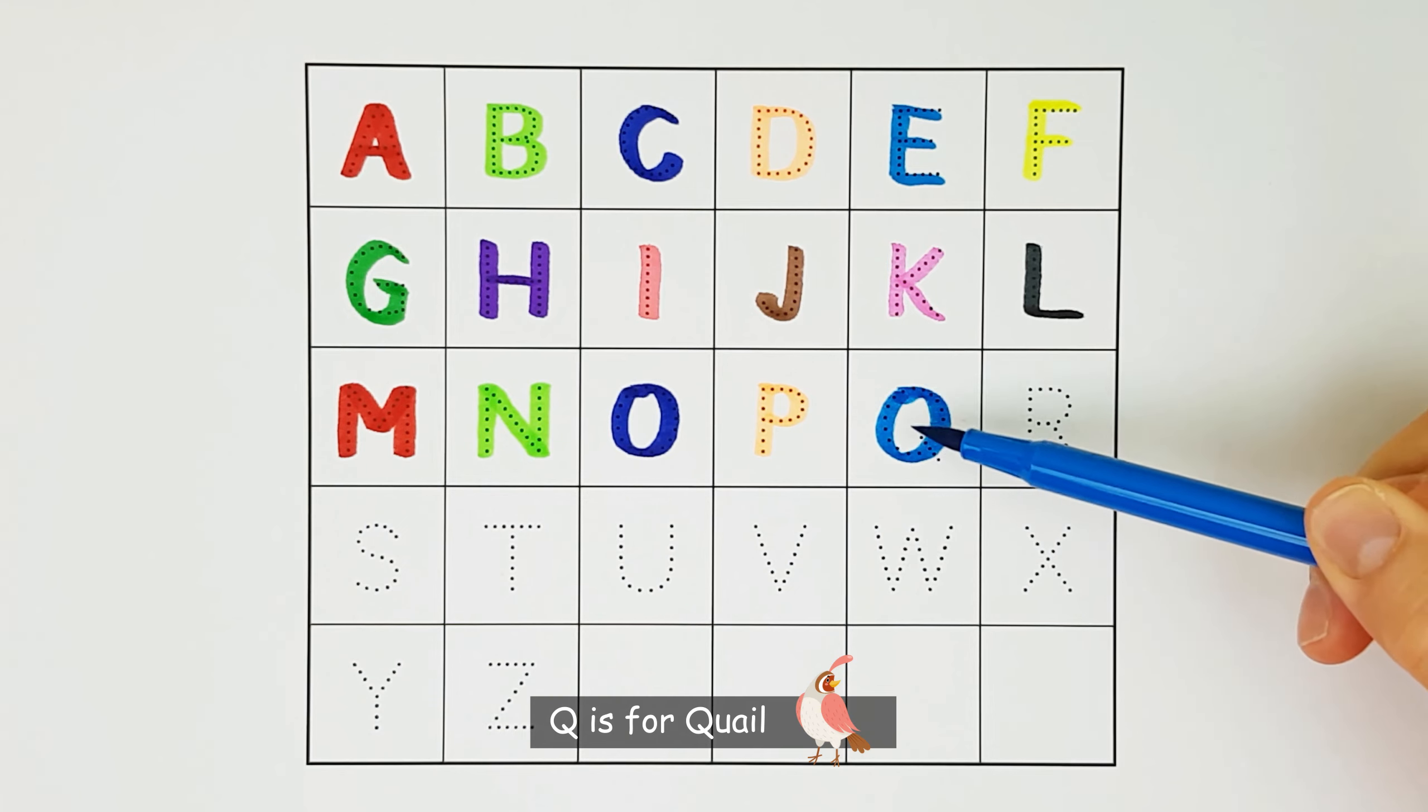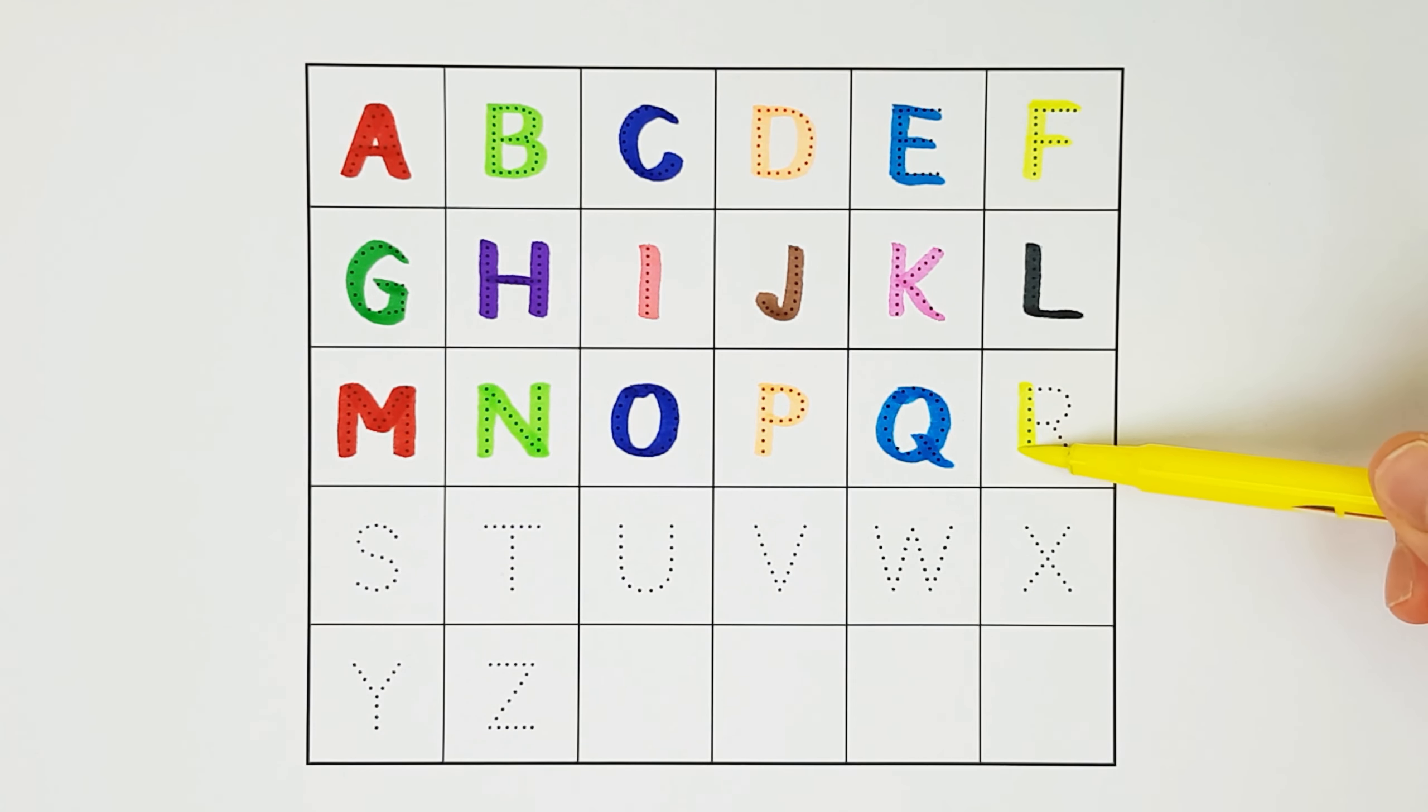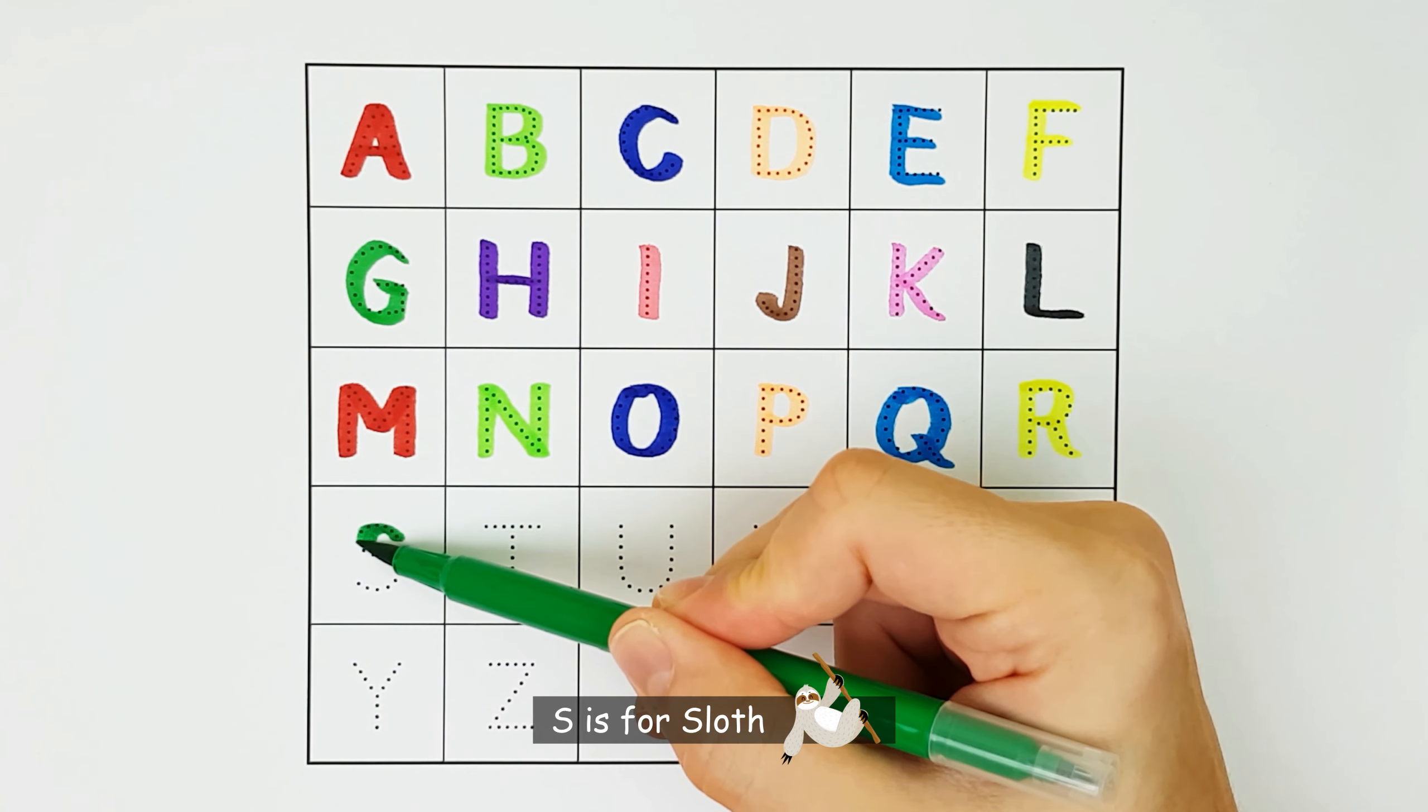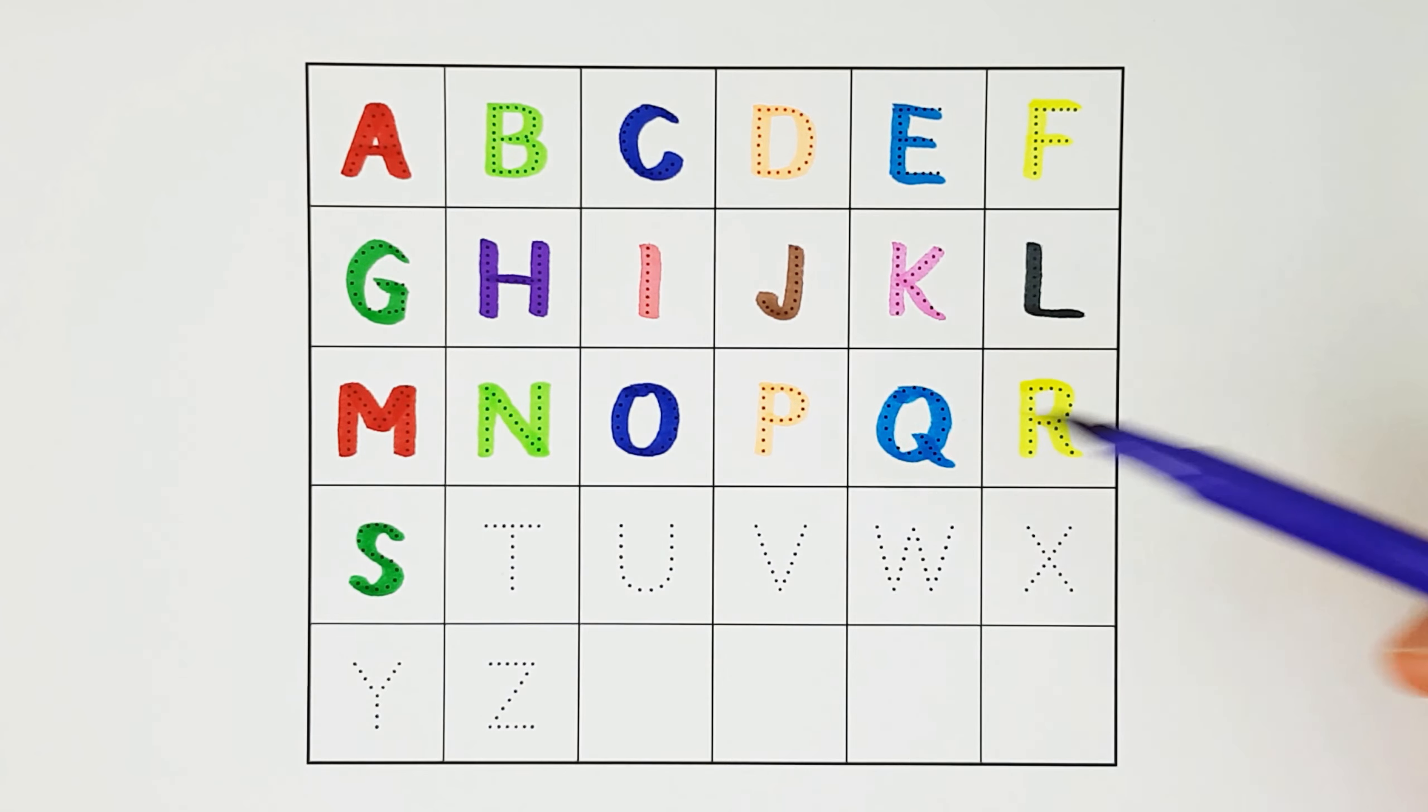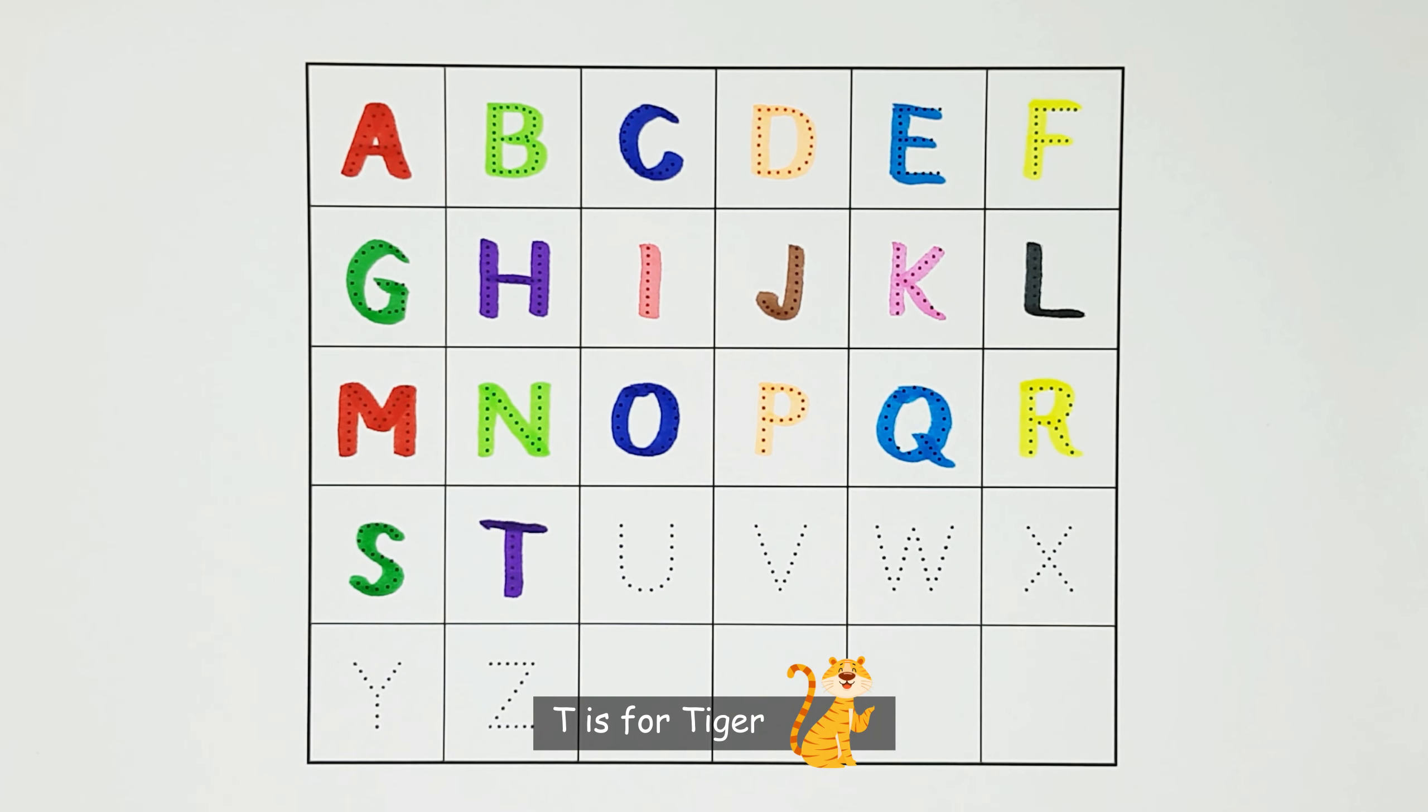Q. Q is for Quail. Q. R. R. R is for Raccoon. R. S. S is for Sloth. S. T. T is for Tiger. T.